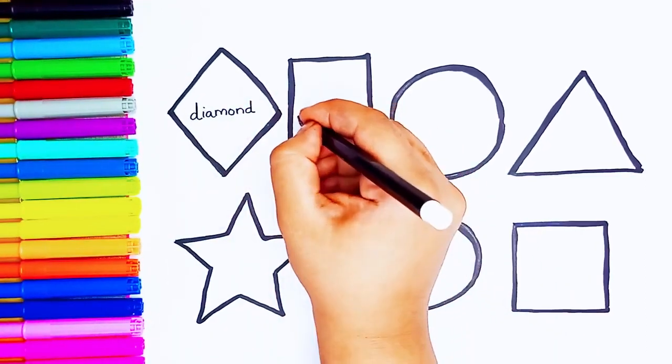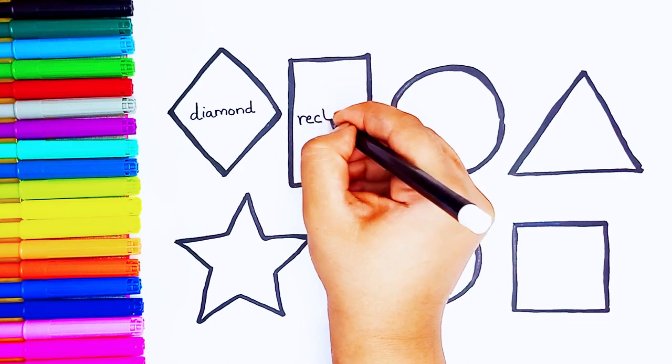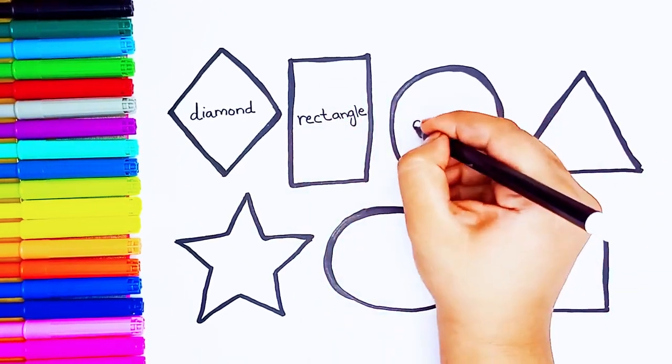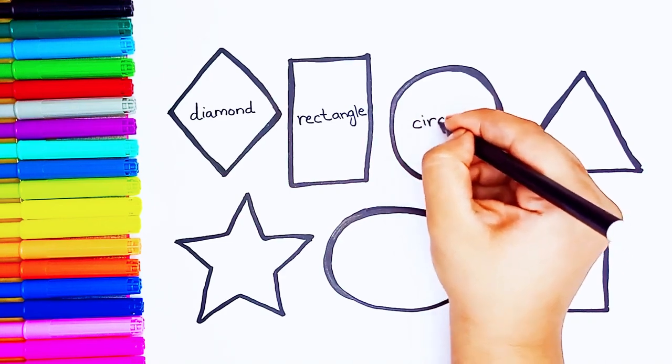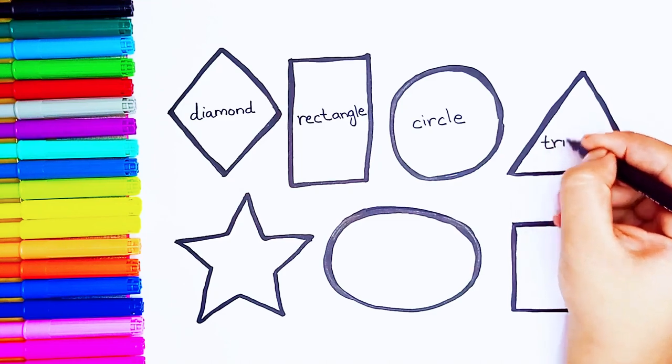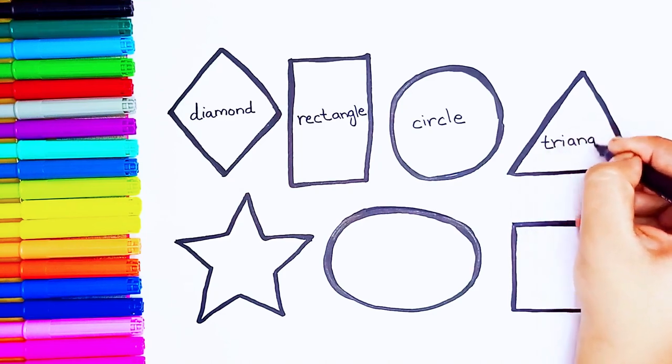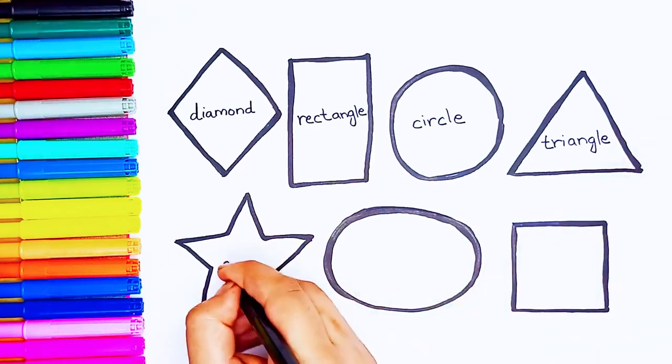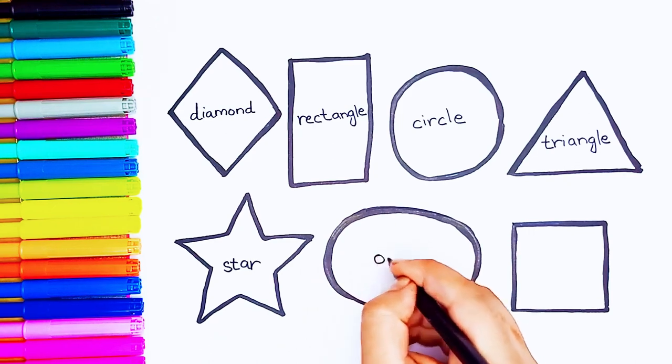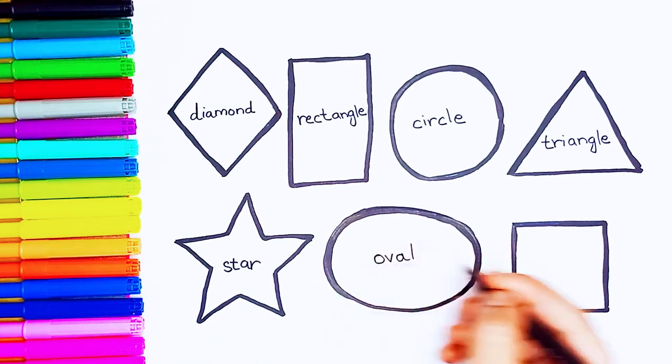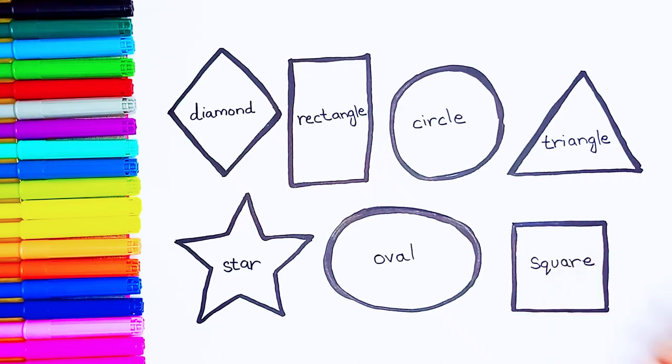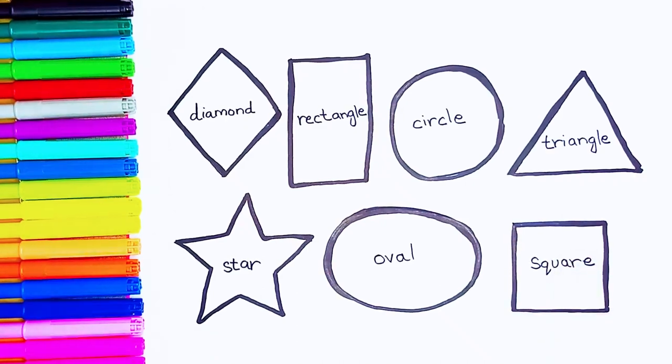Square: C, D, A, N, G, L, E. Rectangle: C, I, R, C, L, E. Circle: D, R, I, A, N, G, L, E. Triangle: S, D, A, R. Star: O, V, A, L. Oval: S, Q, U, A, R, E. Square.